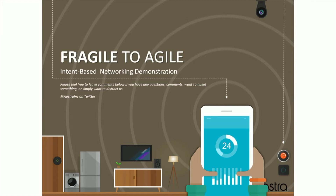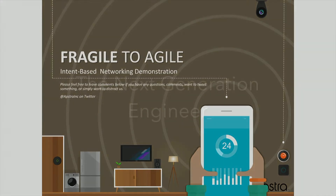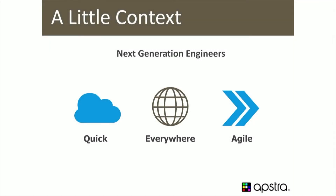In version 1.2, we've introduced really significant features that address the fragility question — whether it's the network or the processes around the network that your engineering teams engage in day-to-day. The next-generation engineer has to compete with the cloud, and what I mean by that is he's got to be quick.